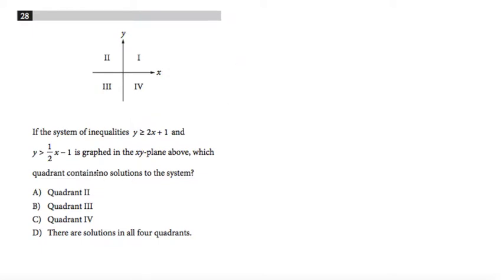All right, so it says if the system of inequalities y is greater than 2x plus 1 and y is greater than 1 half x minus 1 is graphed in the xy plane above, which quadrant contains no solution to the system?